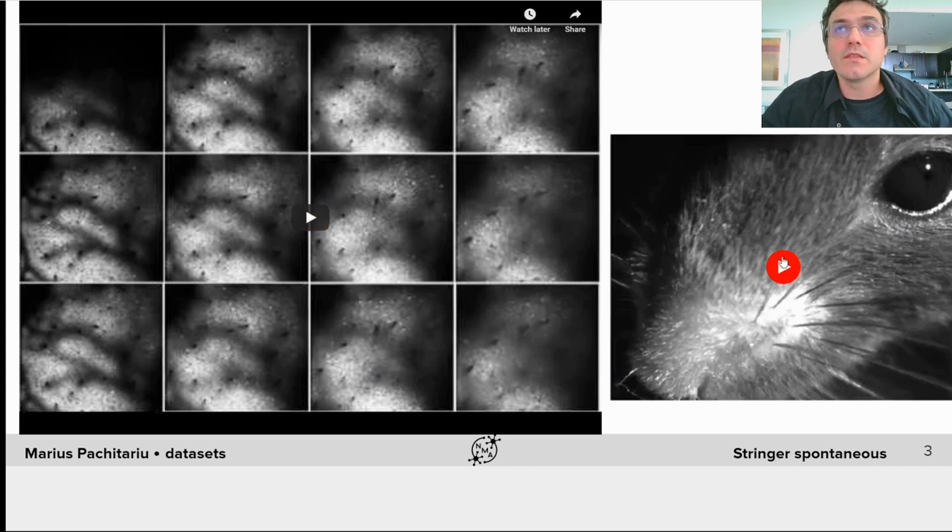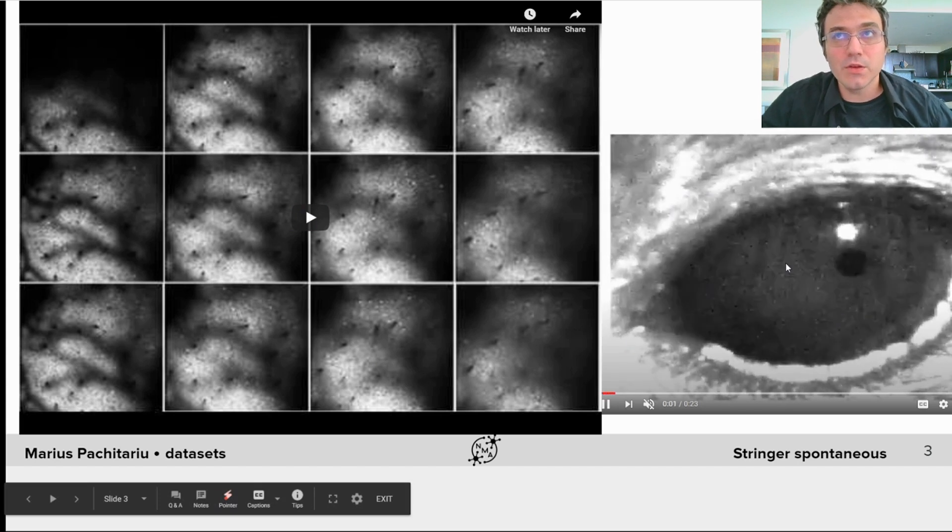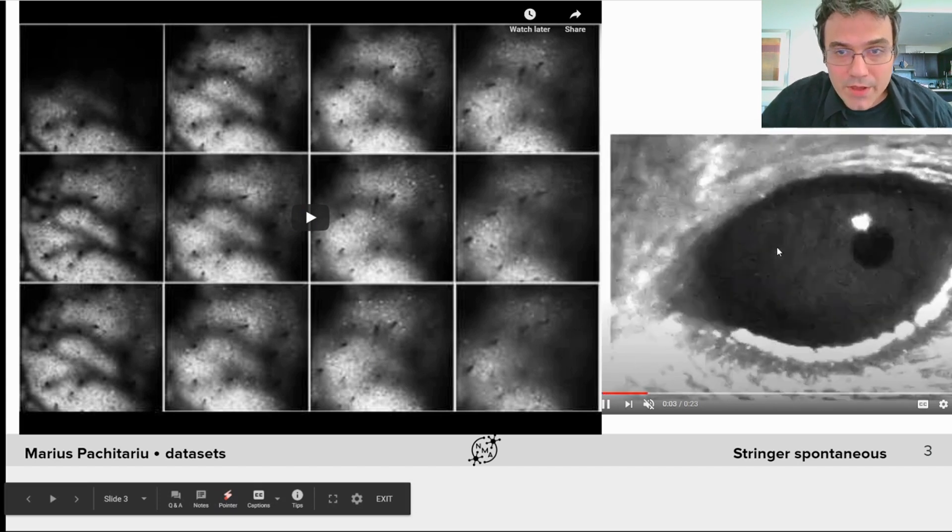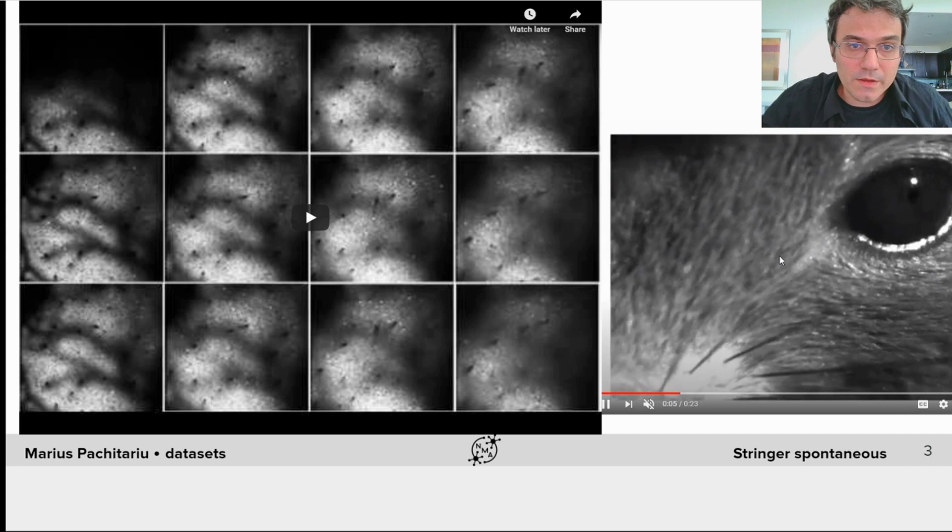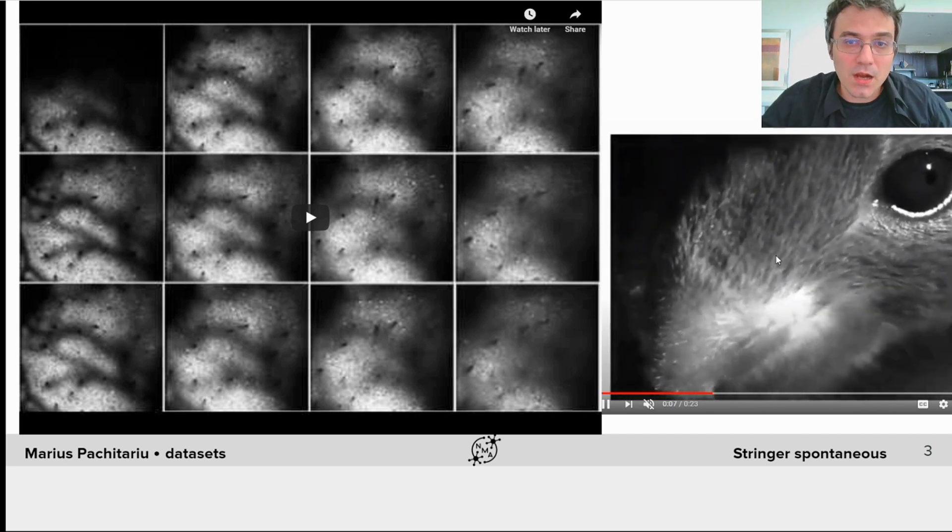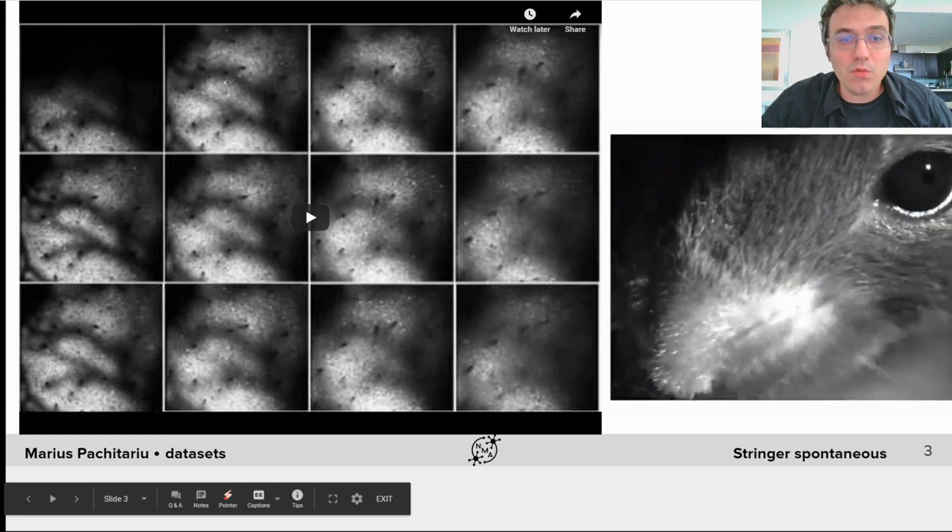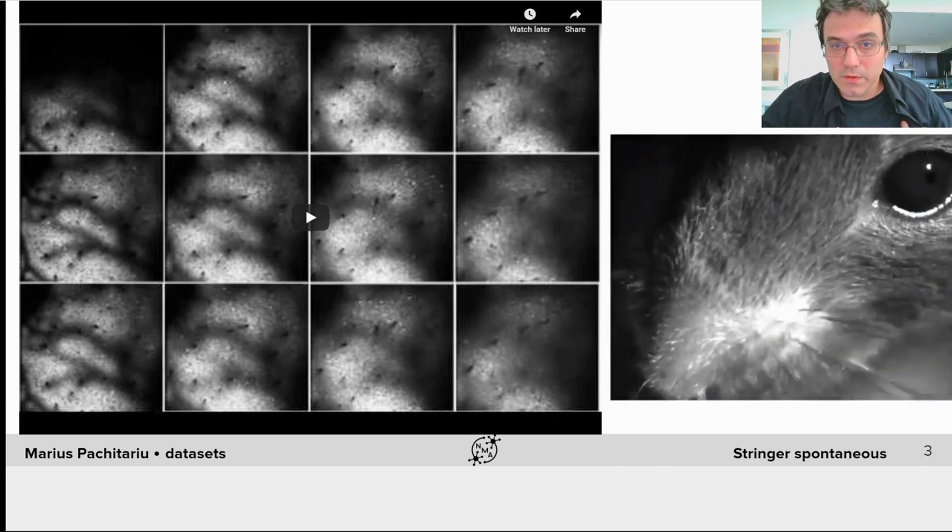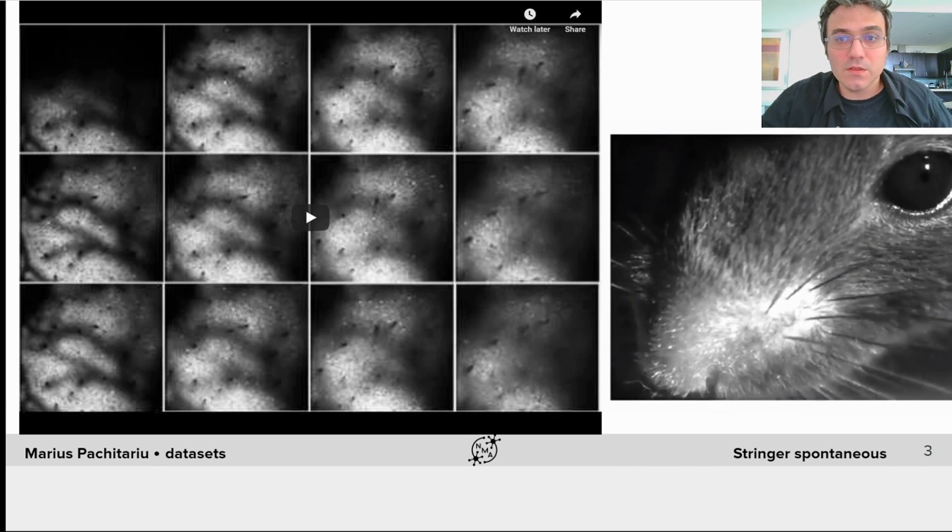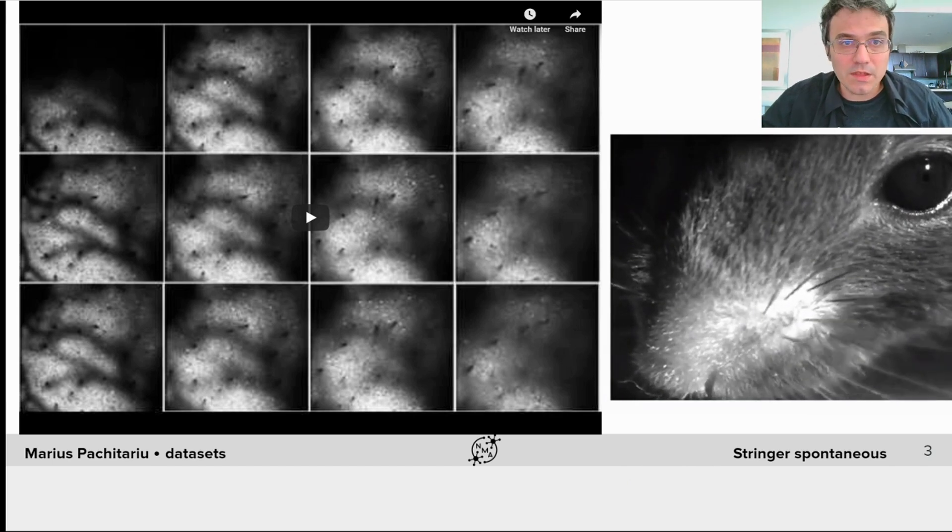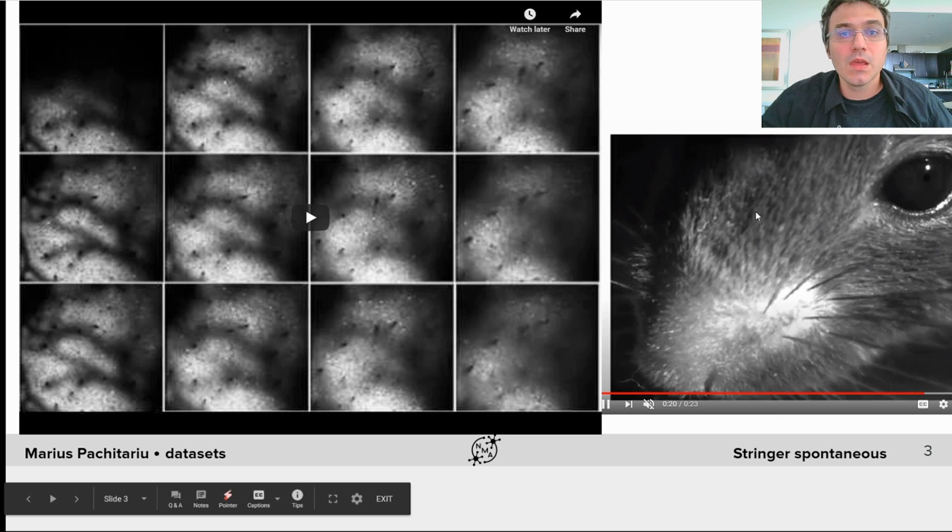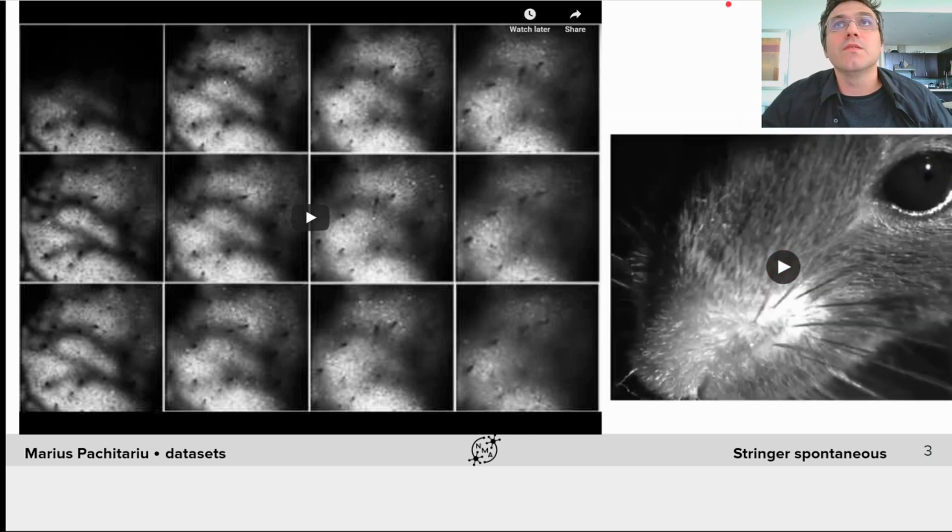This data is from a mouse that is head-fixed on an air-floating ball. The brain area we are recording from is visual cortex, but the recordings are done in complete darkness, meaning there is no sensory input arriving to the visual cortex. The mouse is performing what we call spontaneous behaviors, such as locomotion, whisking, sniffing, and grooming behaviors. The dataset for the project includes several quantifications of these behaviors.